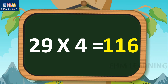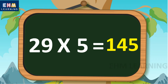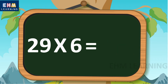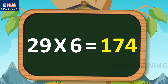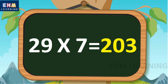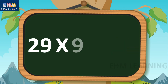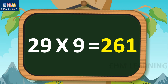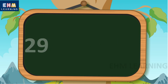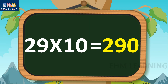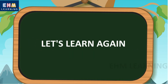29 4s are 116. 29 5s are 145. 29 6s are 174. 29 7s are 203. 29 8s are 232. 29 9s are 261. 29 10s are 290. Let's learn again!